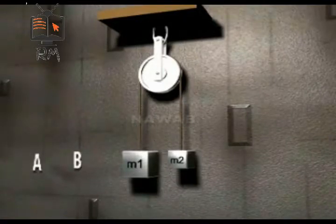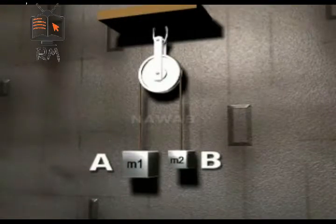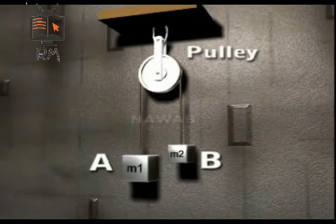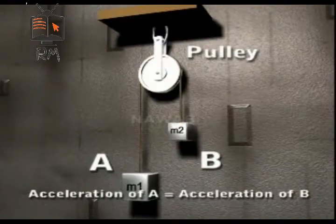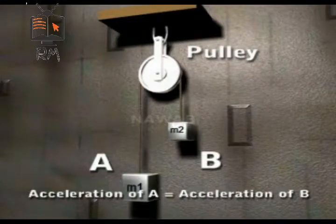Motion of bodies connected by a string. Case 1: When the bodies move vertically. Suppose two bodies A and B having masses M1 and M2 respectively are connected to two ends of an inextensible string which passes over a frictionless pulley. If M1 is greater than M2, then body A will move downward and body B will move upward. Since both bodies are connected by an inextensible string, the magnitude of acceleration in both of them will be the same.